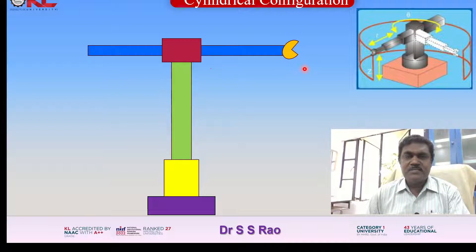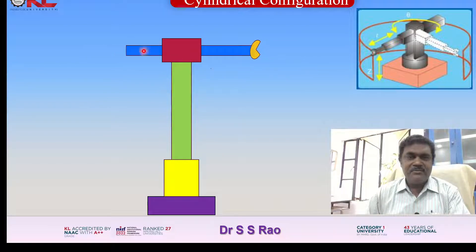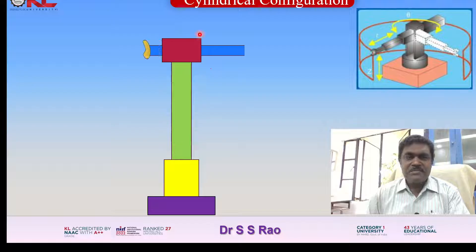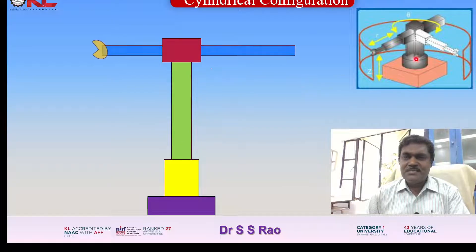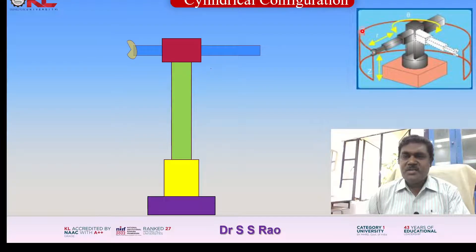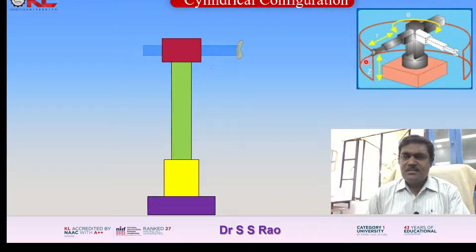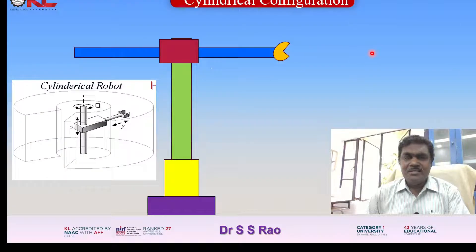Now let us see the simulation of how the end effector will move in a circular fashion about this vertical z-axis. That will control the circular shape of the work area. This is the entire area where the end effector can reach.